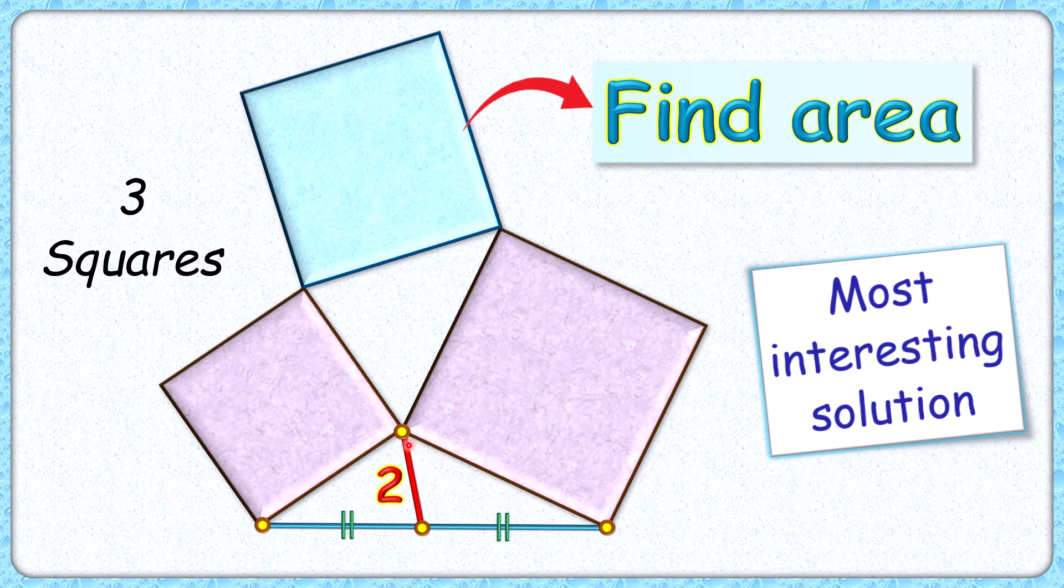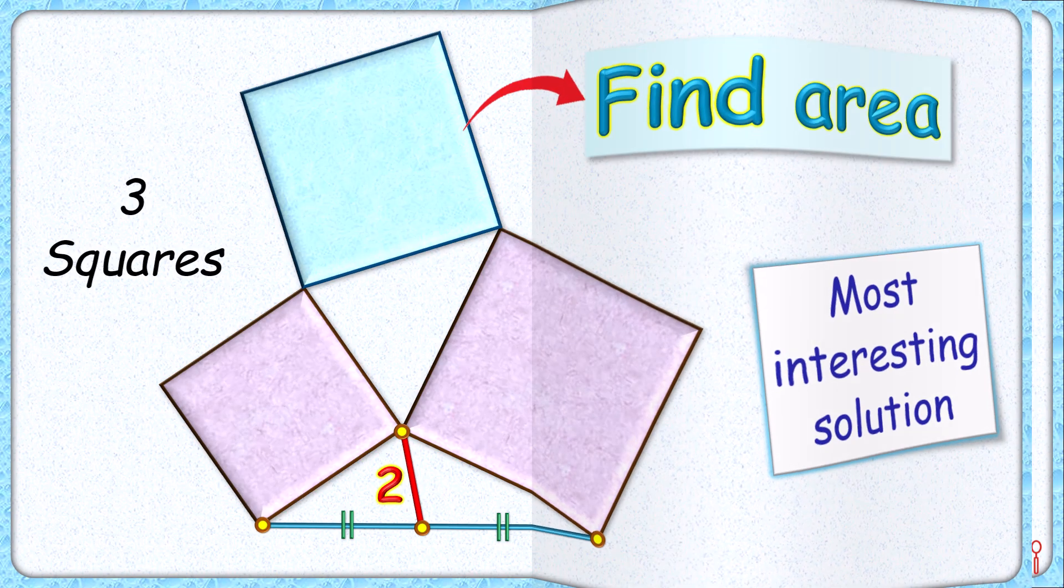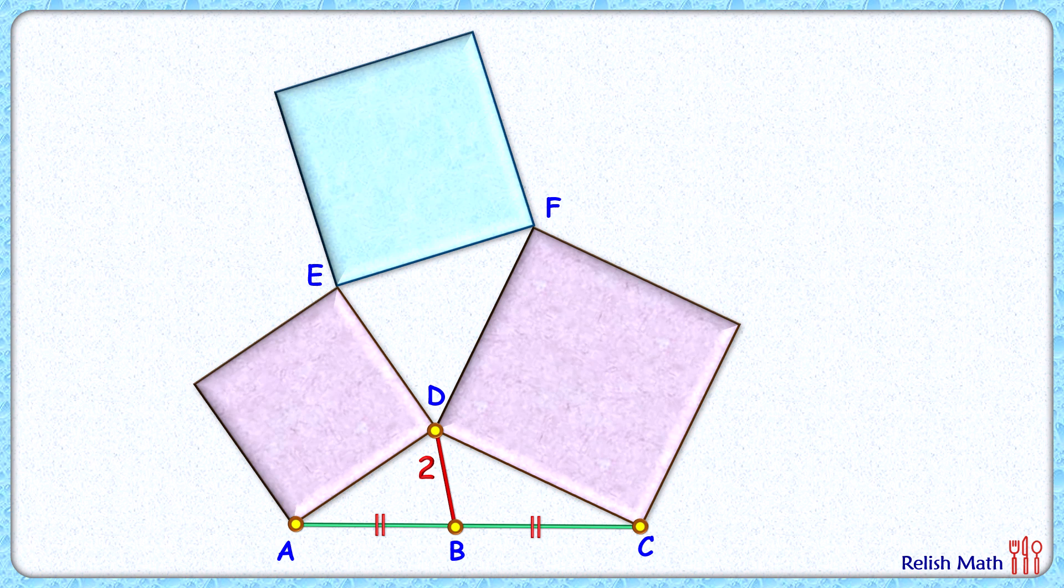The exciting part is using only this information and without using any mathematical formulas or theorems, we have to find the area of this blue square. Okay, let's check the solution. Let's concentrate here on this green triangle and this pink triangle.